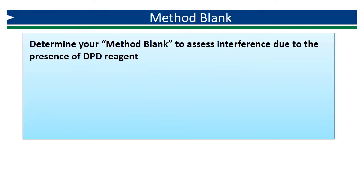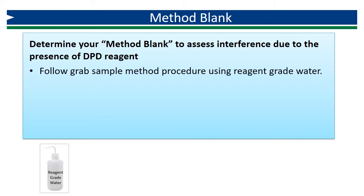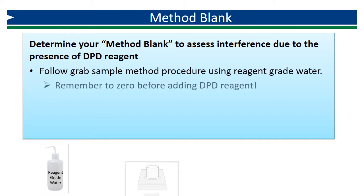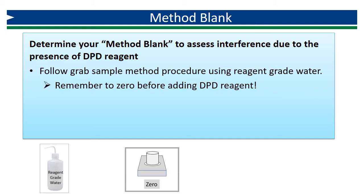The first step is to determine the method blank value for the lot of reagent you are using in order to assess the level of interference caused by the DPD. The procedure for determining a method blank involves following the procedure for the chosen method, with the exception of the sample matrix — rather than using water that may or may not contain chlorine, use reagent-grade water that does not contain chlorine. Remember to zero before adding DPD reagent.